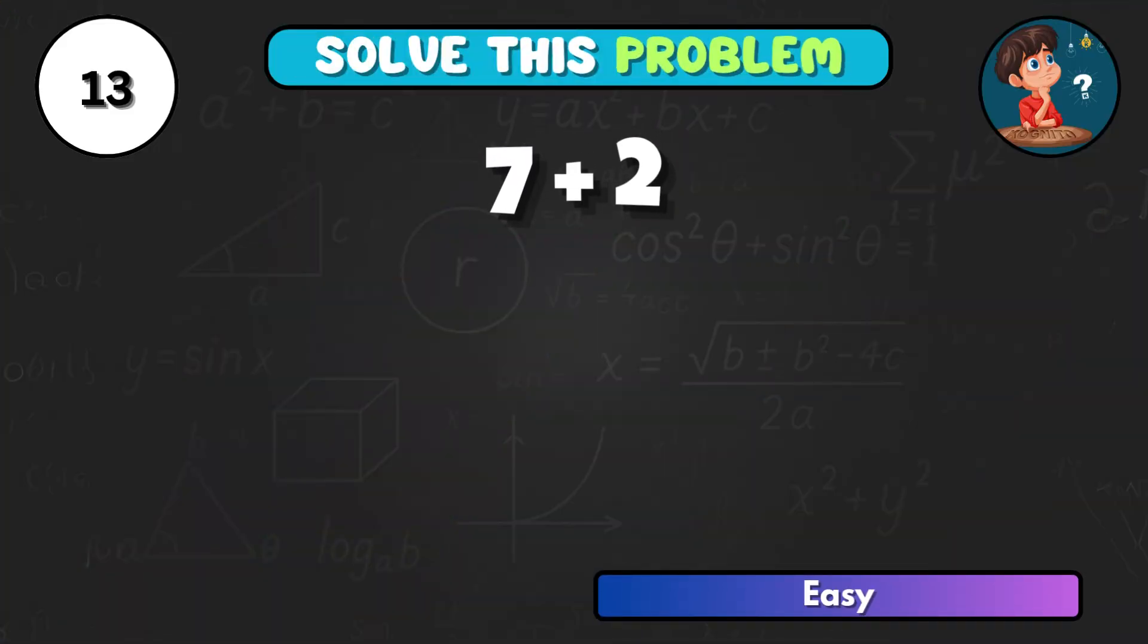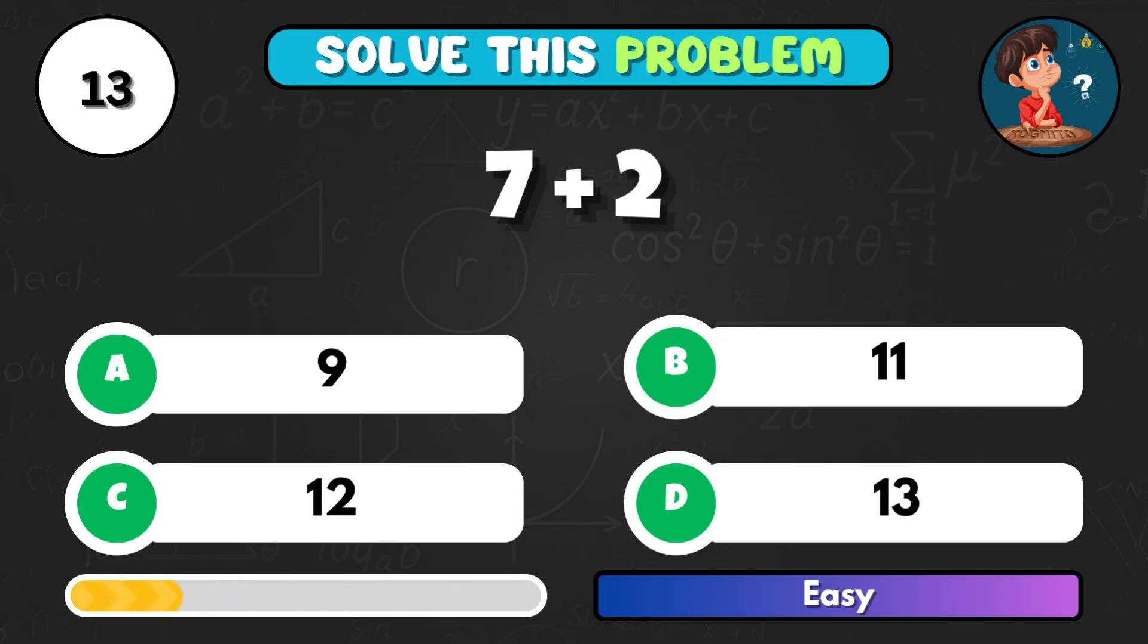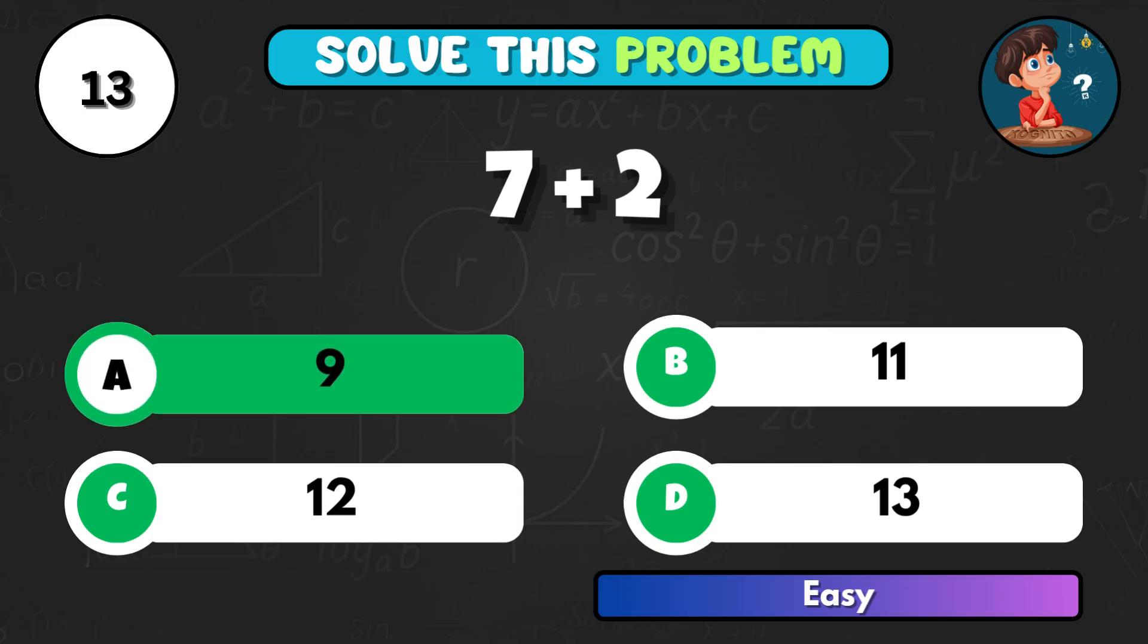7 joined by 2 equals what? That's A, which is 9.